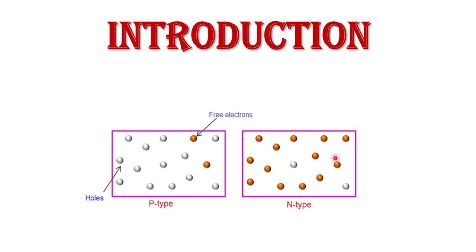It is not possible to manufacture any device using only p-type or only n-type semiconductor. To manufacture a device, we use them together. The basic electronic device most commonly used in electronics is the p-n junction diode, made up of p-type and n-type semiconductor. The p-n junction diode is the basic building block on which the operation of all semiconductor devices depends. It is a device with two elements: anode and cathode.